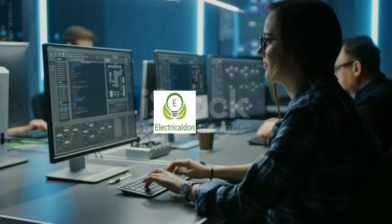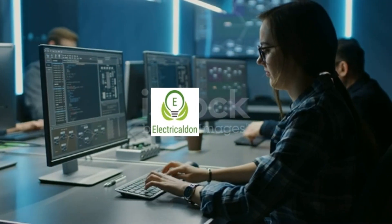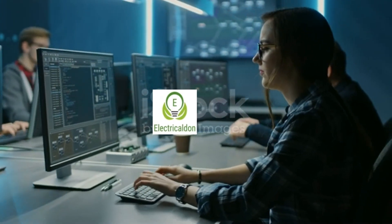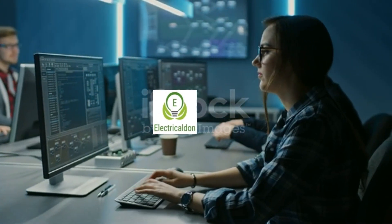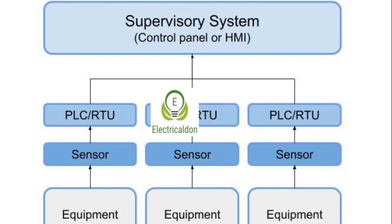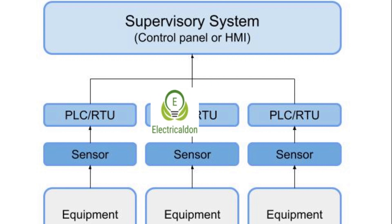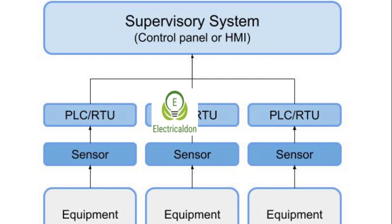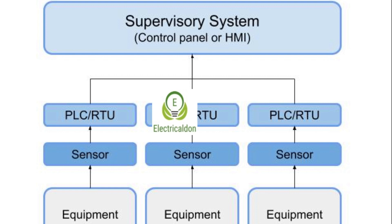Components of SCADA systems. Field instruments: sensors and actuators. These are devices that measure physical parameters — temperature, pressure, flow, etc. — and perform actions such as opening or closing valves and starting or stopping motors in the field.